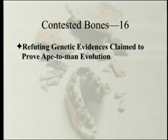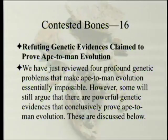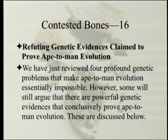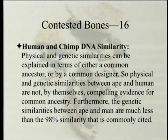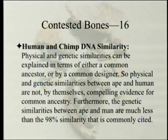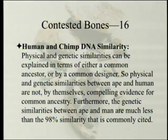Now we're getting into refuting genetic evidence's claim to prove ape-to-man evolution. We've reviewed four profound genetic problems that make ape-to-man evolution essentially impossible. However, some will still argue there are powerful genetic evidences that conclusively prove ape-to-man evolution. Number one: human and chimp DNA similarity. Physical and genetic similarities can be explained in terms of either a common ancestor or a common designer, so they are not by themselves compelling evidence for common ancestry. Furthermore, the genetic similarities are much less than the 98% commonly cited.